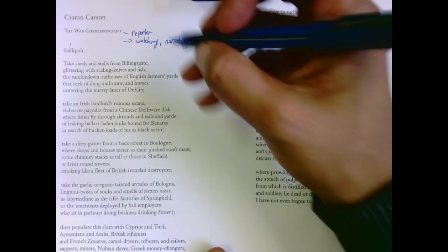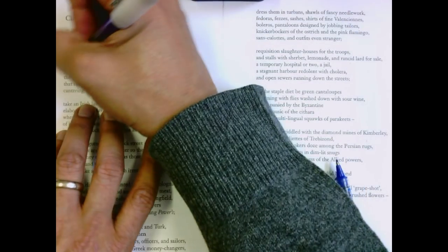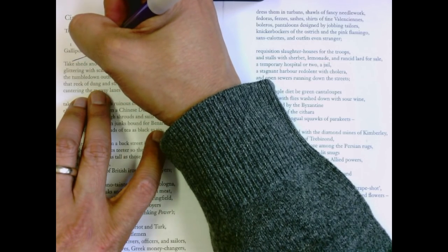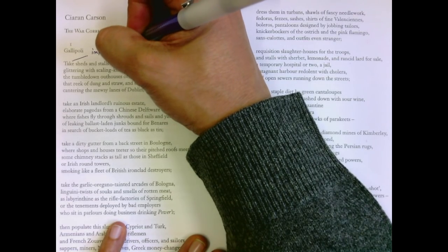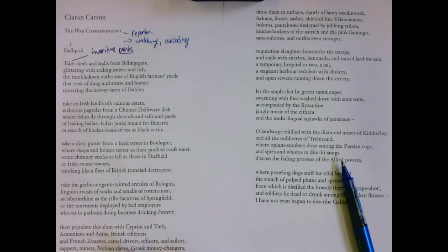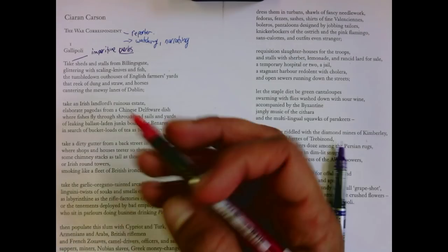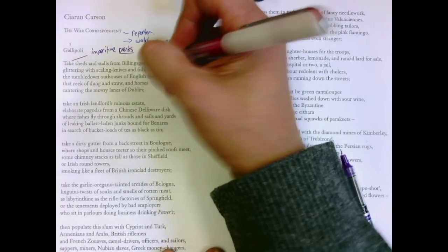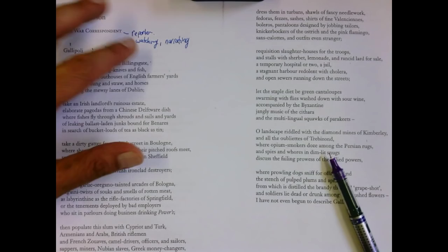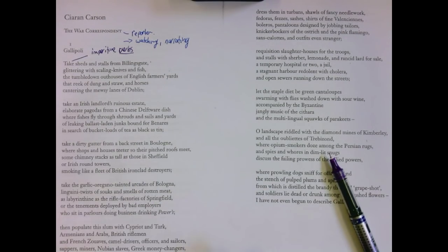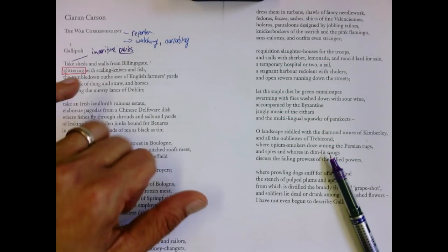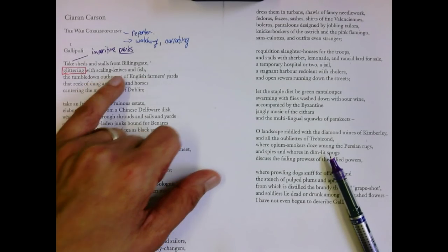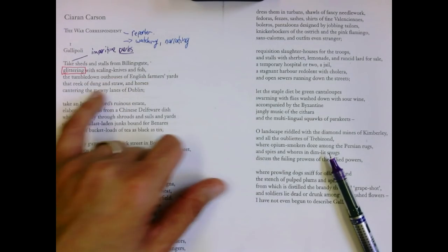So to describe this place, he uses imperative verbs that command you to, in your imagination, bring a lot of things together. Take sheds and stalls from Billingsgate. You could know Billingsgate is a fish market in London, but you don't need to know because we're going to be told. Glittering with scaling knives and fish, the tumble-down outhouses of English farmyards.